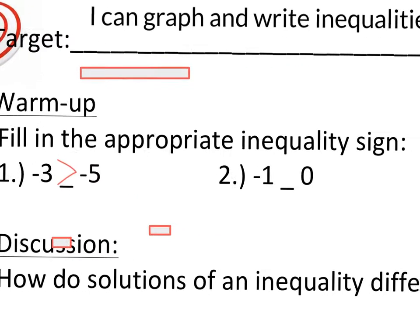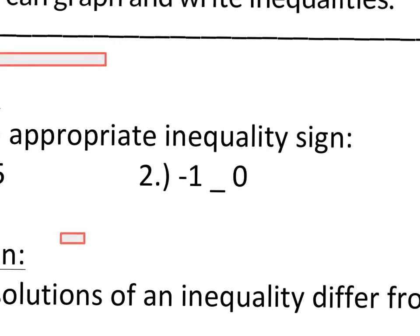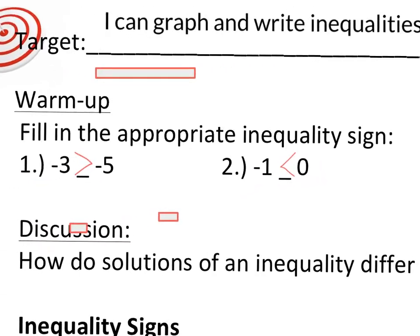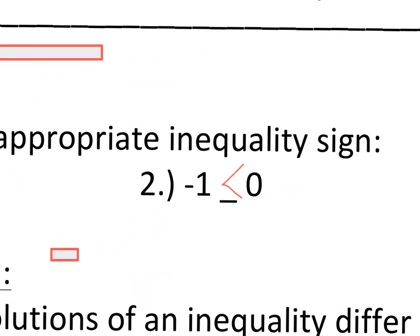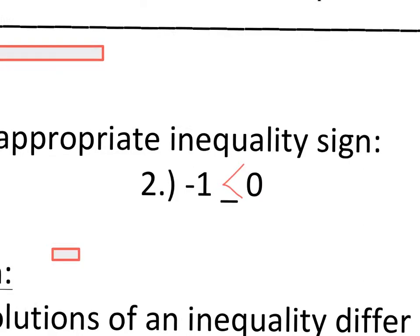Next question: negative one versus zero. Zero is larger, so we put the inequality sign that way. This would read, left to right, negative one is less than zero. You can read it the other way and say zero is greater than negative one, but typically we read left to right.